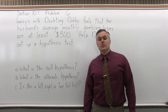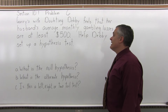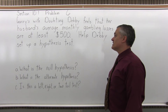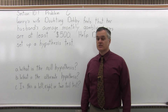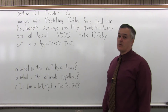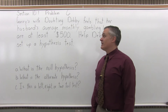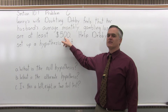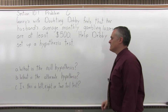This is Section 10.1, Problem number 6. It says that Gary's wife Debbie feels that her husband's average monthly gambling losses are at least $500. Help Debbie set up a hypothesis test. Debbie's husband Gary says he only loses $300 or less every month, while his wife Debbie thinks it's $500 or more. So let's set up a test for this one.